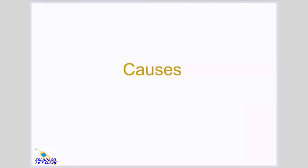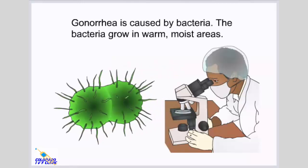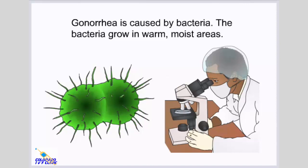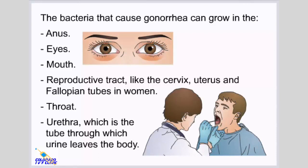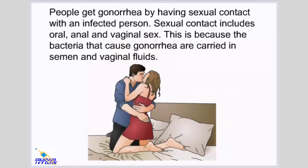Causes. Gonorrhea is caused by bacteria that grow in warm, moist areas. The bacteria can grow in the anus, eyes, mouth, reproductive tract including the cervix, uterus, and fallopian tubes in women, throat, and urethra, which is the tube through which urine leaves the body. People get gonorrhea by having sexual contact with an infected person, including oral, anal, and vaginal sex, because the bacteria are carried in semen and vaginal fluids.